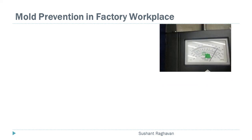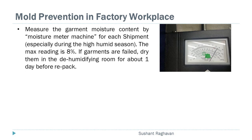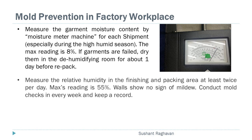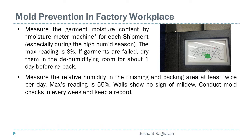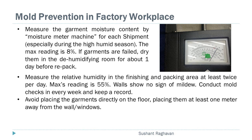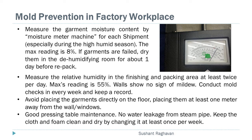Mold prevention in the factory workplace (continued): measure the garment moisture content by moisture meter machine for each shipment, especially during the high humid season — the max reading is 8%. If garments fail, dry them in the dehumidifying room for about 1 day before repacking. Measure the relative humidity in the finishing and packing area at least twice per day — max reading is 55%. Walls should show no sign of mildew; conduct mold checks every week and keep a record. Avoid placing garments directly on the floor — place them at least 1 meter away from walls or windows. Good pressing table maintenance: no water leakage from steam pipes; keep the cloth and foam clean and dry by changing it at least once per week.